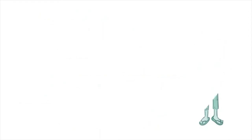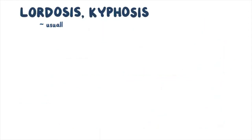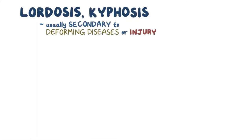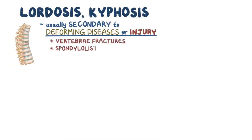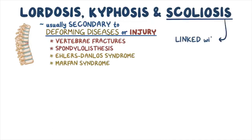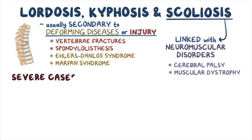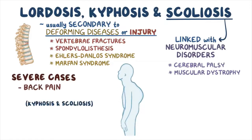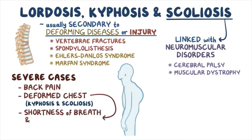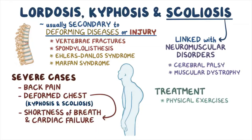As a quick recap: lordosis and kyphosis are usually secondary to diseases or injuries that deform vertebrae and ligaments, such as vertebral fractures, spondylolisthesis, Ehlers-Danlos syndrome, and Marfan syndrome. Scoliosis is linked with neuromuscular disorders like cerebral palsy or muscular dystrophy. In severe cases, lordosis, kyphosis, and scoliosis can cause back pain. Kyphosis and scoliosis may also deform the chest, resulting in shortness of breath and cardiac failure. Treatment usually involves physical exercises, braces, pain medication, or surgery.